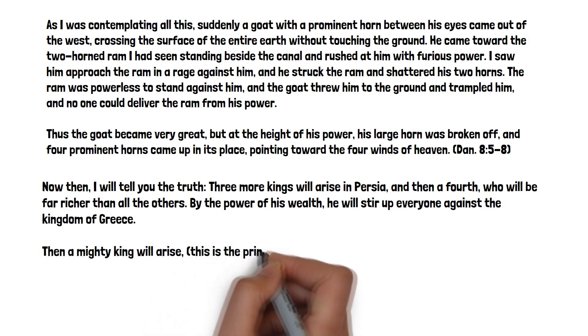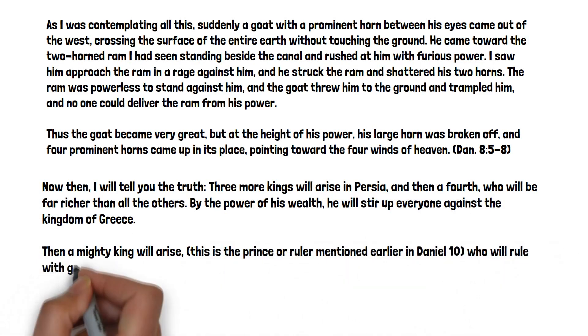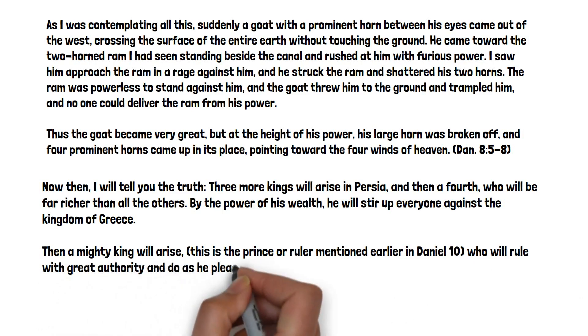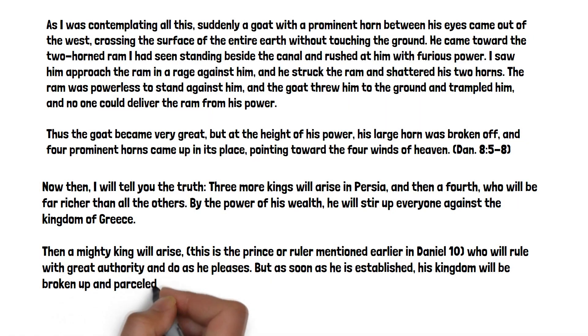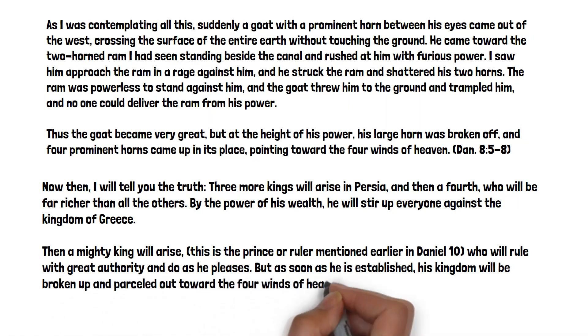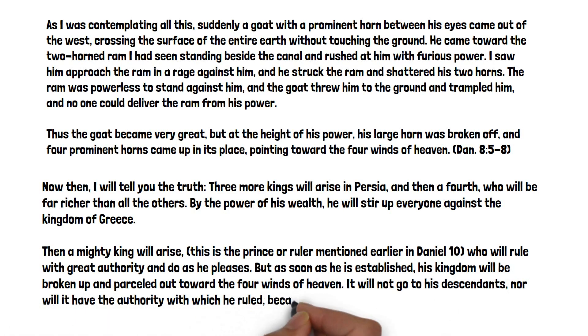Then, a mighty king will arise. This is the prince or ruler mentioned earlier in Daniel 10, who will rule with great authority and do as he pleases. But as soon as he is established, his kingdom will be broken up and parceled out toward the four winds of heaven. It will not go to his descendants, nor will it have the authority with which he ruled, because his kingdom will be uprooted and given to others.